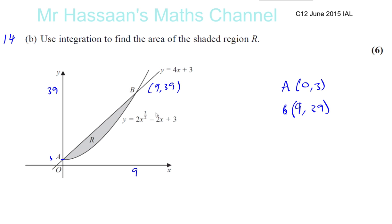Okay, we know now the points A and B from part A. We know the coordinates. And we need to know the area which is enclosed between the line that's given and the curve that's given.